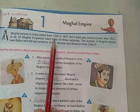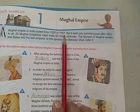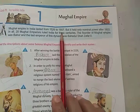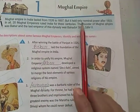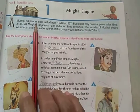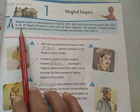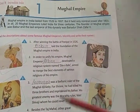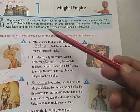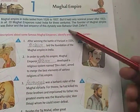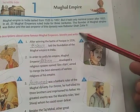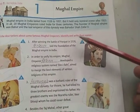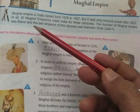The Mughal Empire in India lasted from 1526 to 1857. But it held only nominal power after 1803 — after 1803, very few rulers were able to run this dynasty effectively. Twenty Mughal emperors ruled India for three centuries, meaning approximately 300 years, the Mughal dynasty ruled India.